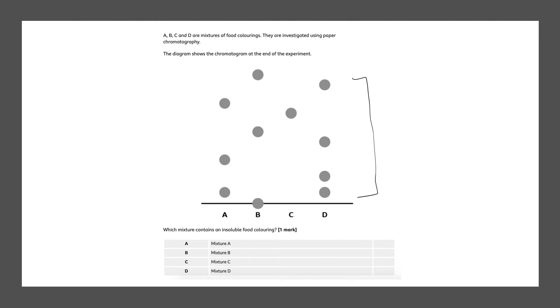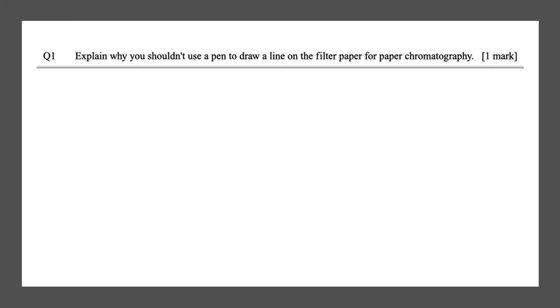Which mixture contains an insoluble food coloring? So this is our line we've drawn. And we see a spot on the line. So this means that this food coloring is insoluble because it has stuck to the line. So we know that the correct answer to this would be B, and that would give you one mark. Our final question.